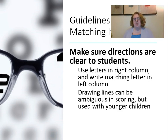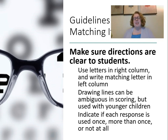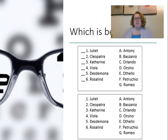If you have really young children, you might be using those lines. Indicate in the directions if each response should be used once, more than once, or not at all. It's a good idea to have students use responses more than once or not at all — but if you write that in the directions, you have to make sure that sometimes you actually do that, otherwise students will see through those instructions. The top example is better because it's really clear to the students that they should be writing those letters in the boxes.